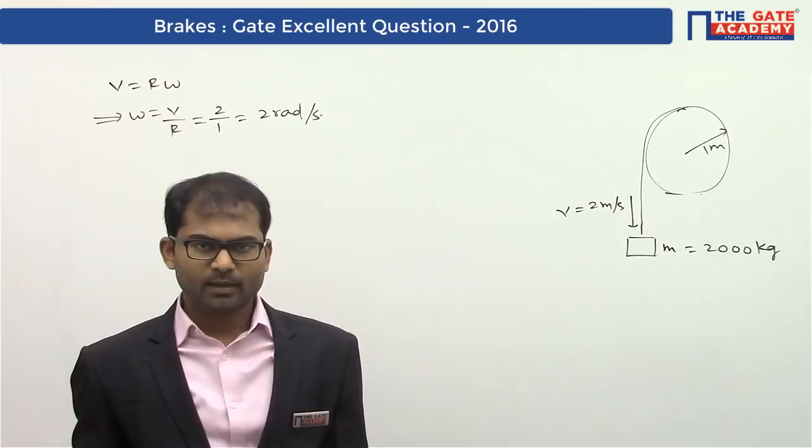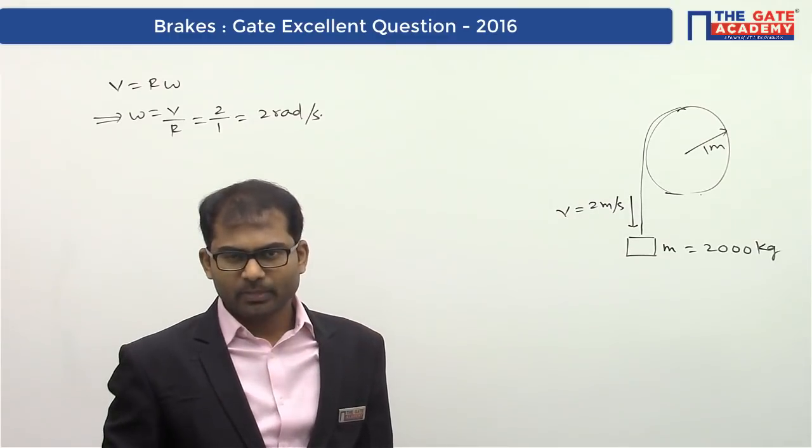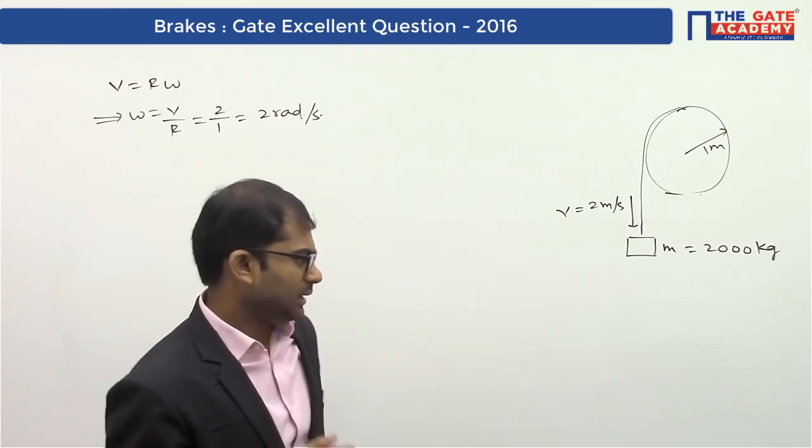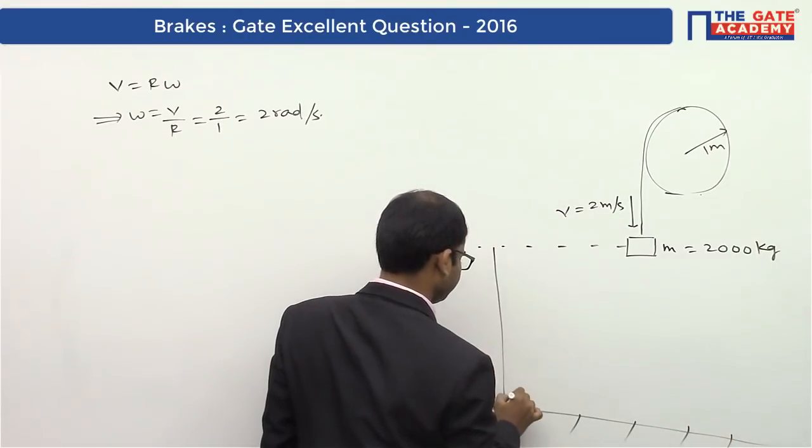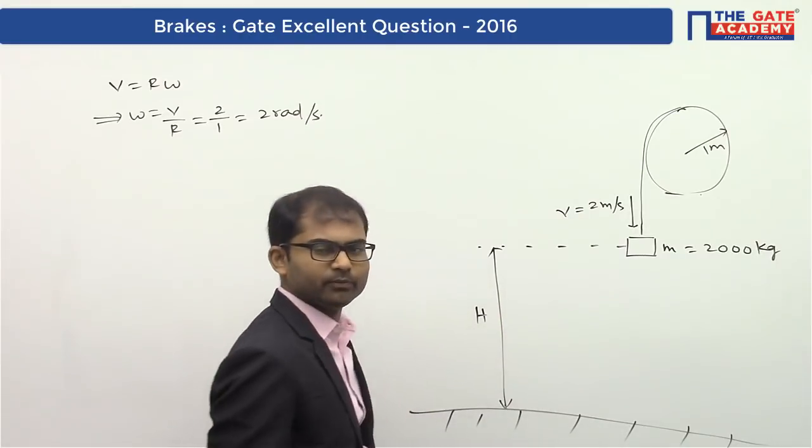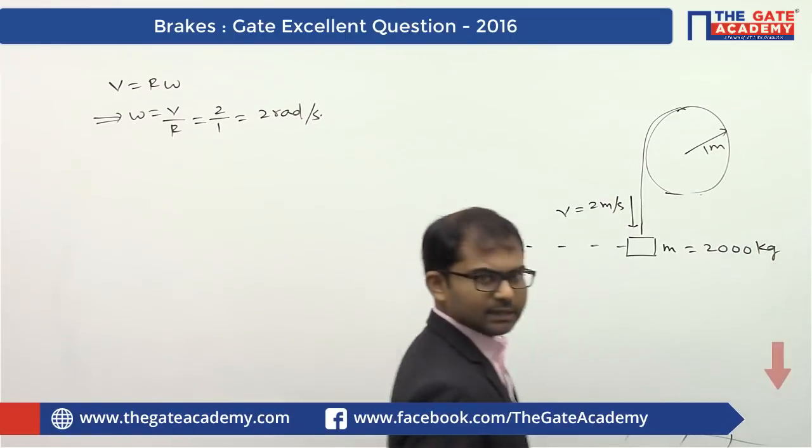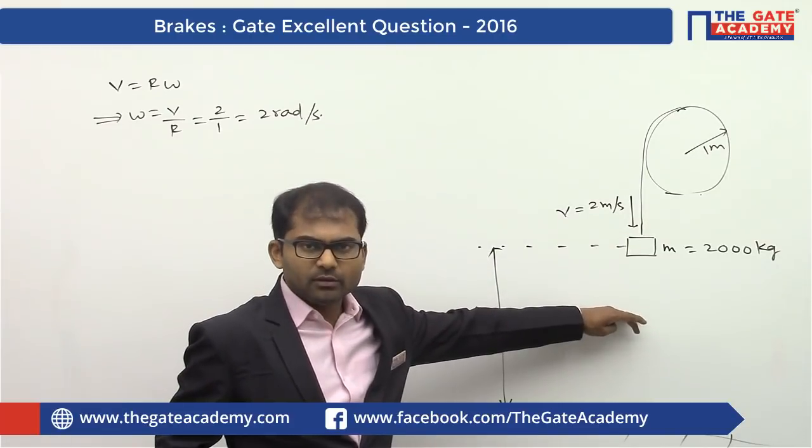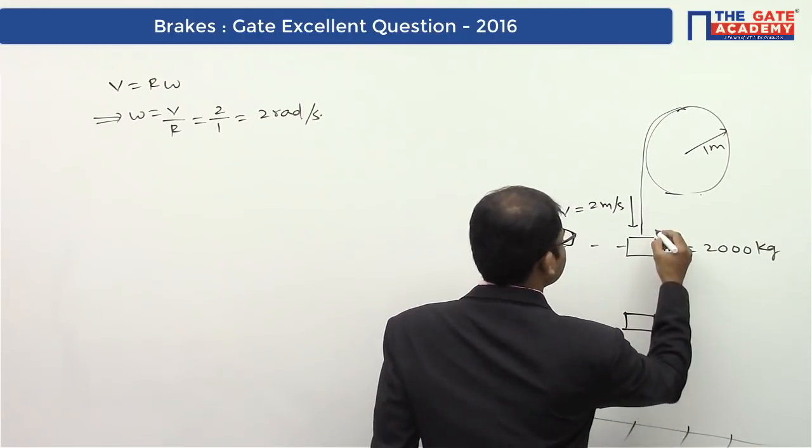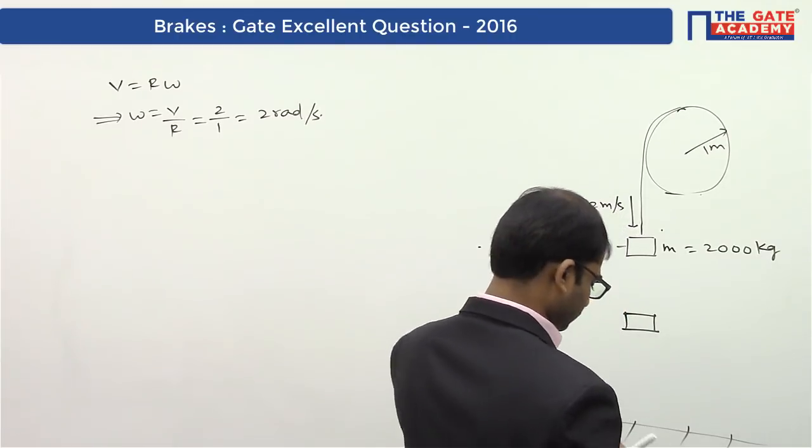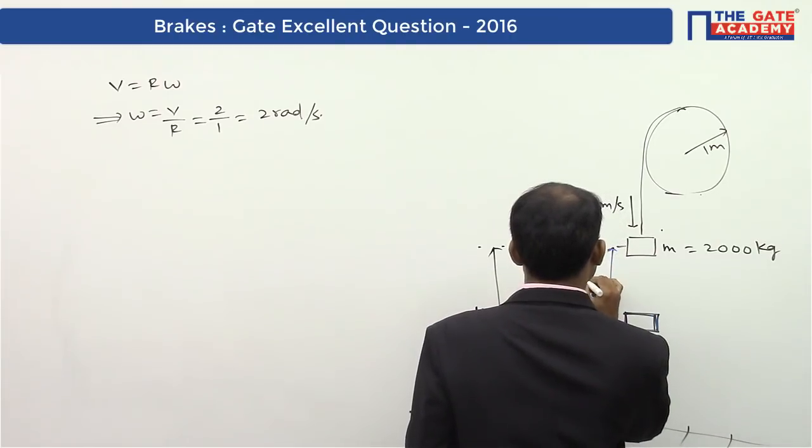Now, to get energy absorbed by the brake we need to take the difference of initial energy and final energy. Let's assume this block is at a height h from the surface. In the question, it's given that the block is made to come to rest by moving 0.5 meters, so it comes to this location.